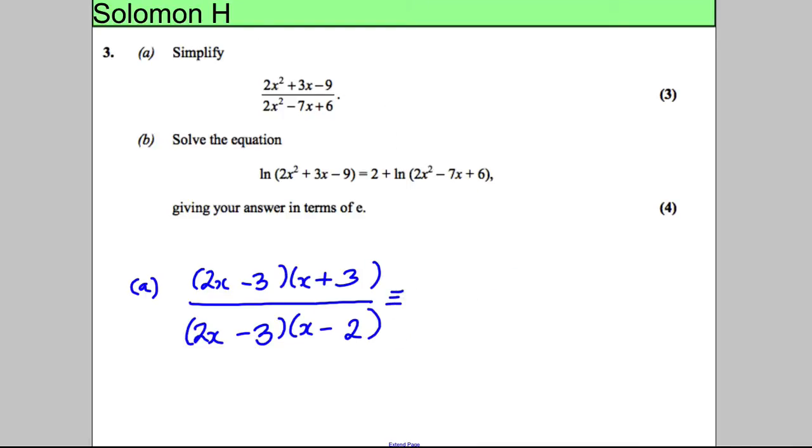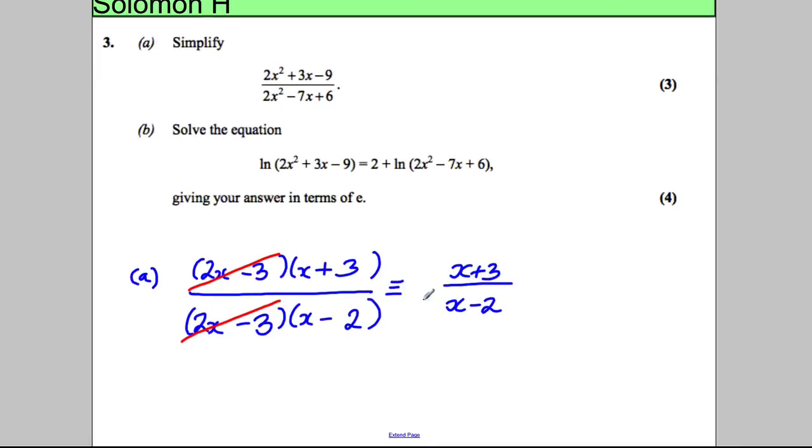We can divide top and bottom by the factor of 2x subtract 3, so we're left with the simplified form of x add 3 divided by x subtract 2. Nice and easy like that.